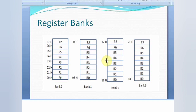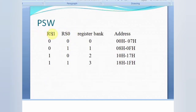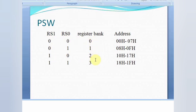To select a register bank we use 2 bits — RS1 and RS0 — in the PSW (program status word) register. Details of the PSW register will be explained in the next video. By setting specific values on RS1 and RS0 we select a particular bank: RS1=0, RS0=0 selects bank 0; 0,1 selects bank 1; 1,0 selects bank 2; and 1,1 selects bank 3.